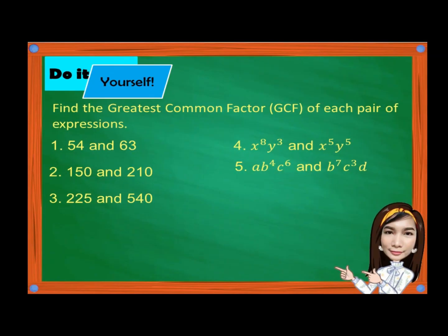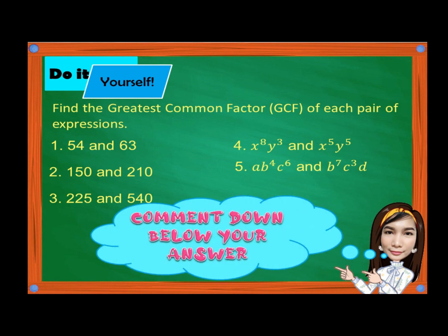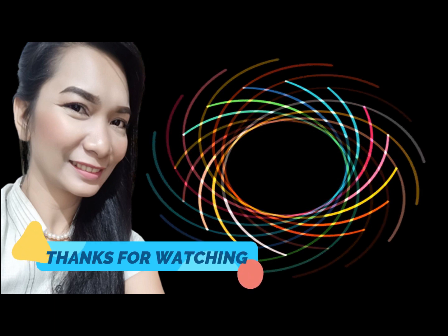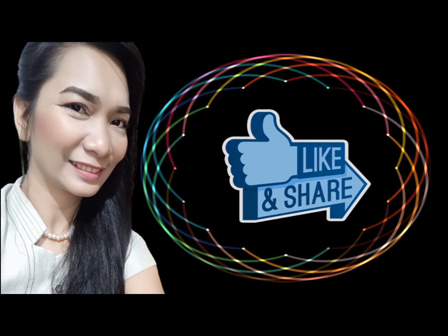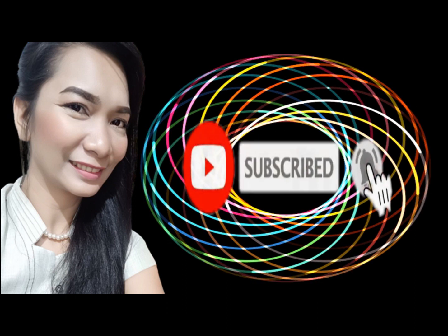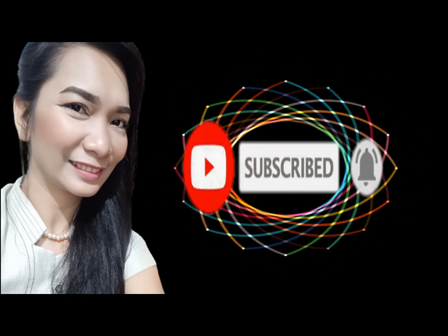Now, it's your turn. Let's see if you learned something from my video lesson. Do it yourself. Find the greatest common factor or GCF of each pair of expressions. Number 1: 54 and 63. Number 2: 150 and 210. Number 3: 225 and 540. Number 4: x raised to 8, y cubed and x raised to 5, y raised to 5. Number 5: ab⁴c⁶ and b⁷c³d. Comment down below your answers. Happy learning! Thanks for watching! Please like and share! And don't forget to subscribe to my channel and click the bell button so that you will be notified whenever I upload a new one.